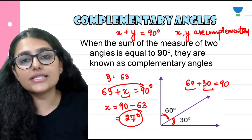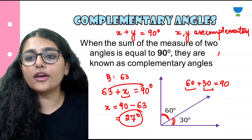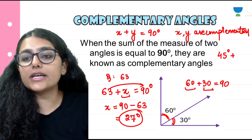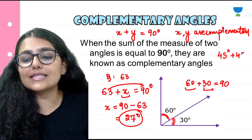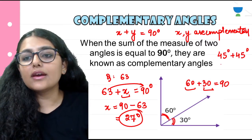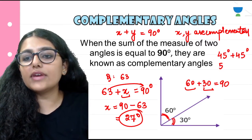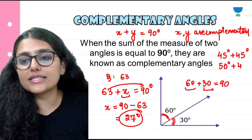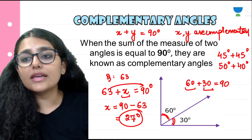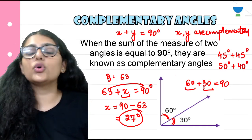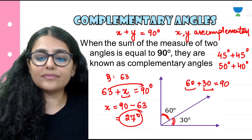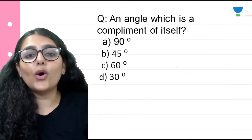You can take many examples. For example, 45 degrees plus 45 degrees is 90 degrees. Then we have 50 degrees plus 40 degrees is 90 degrees. This way you can take any number of examples.